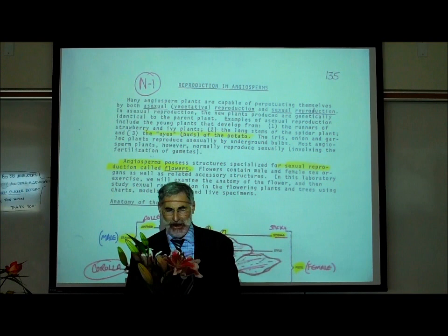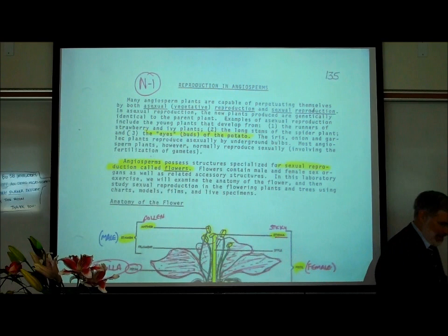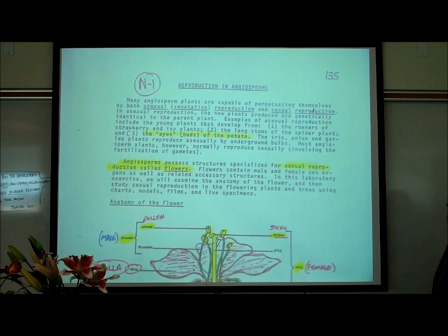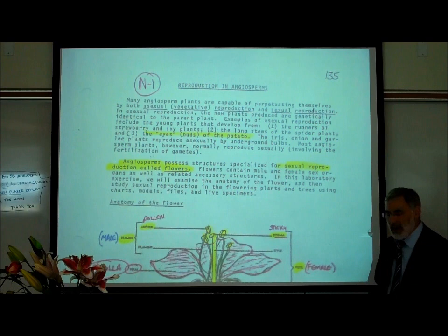Here we have some beautiful lilies with huge sex parts — big sex organs. Now, before we talk about flowers, we want to mention that there are some flowering plants that can reproduce asexually or vegetatively — in other words, without sexual reproduction.